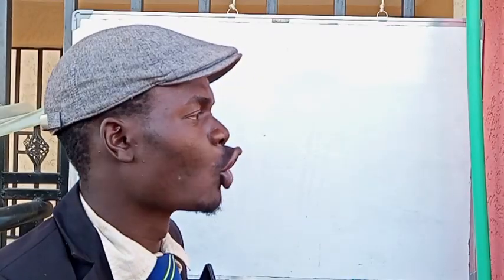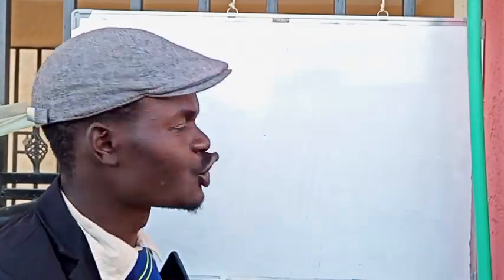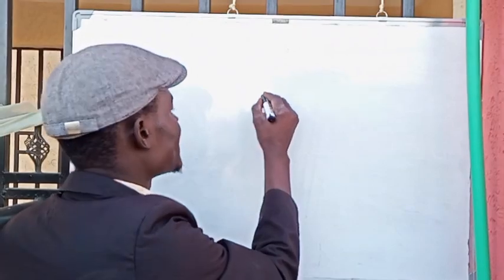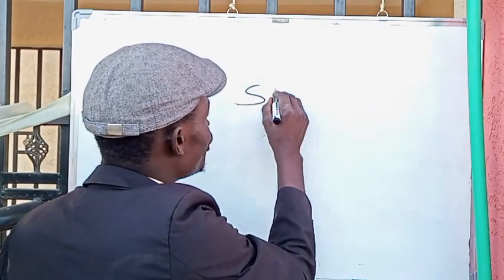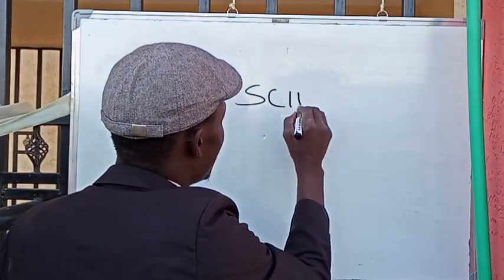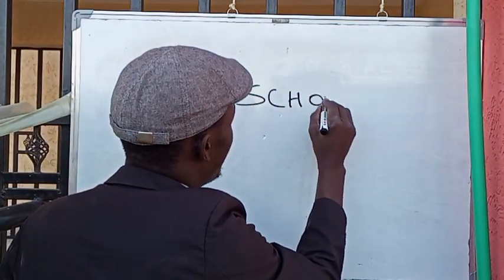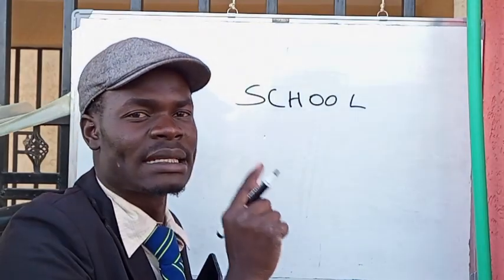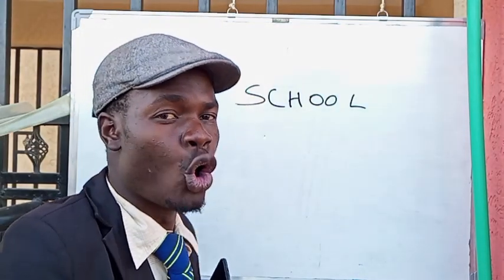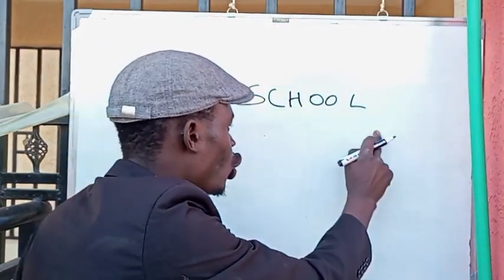Correct spelling of the word school. The correct spelling is S-C-H-O-O-L.